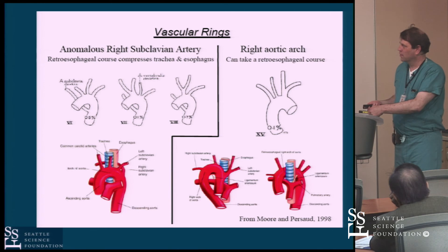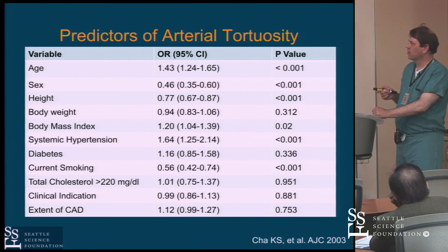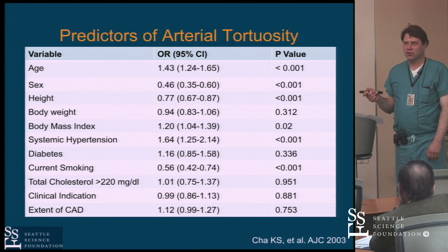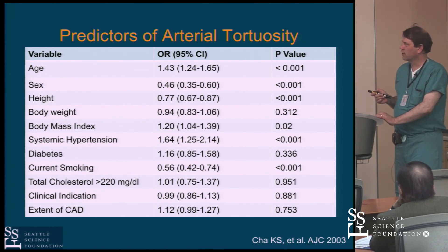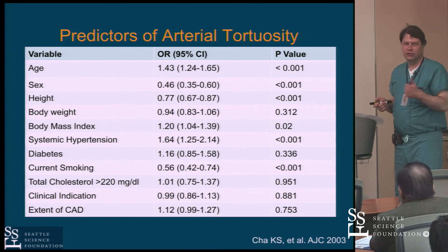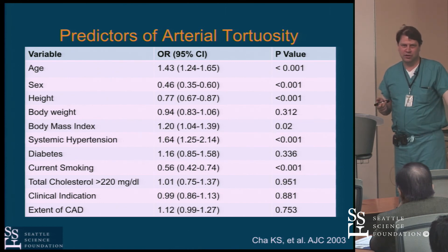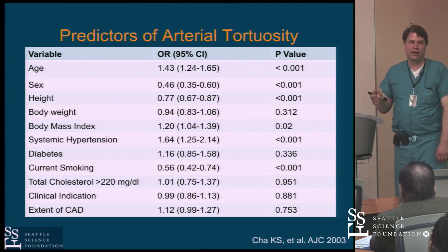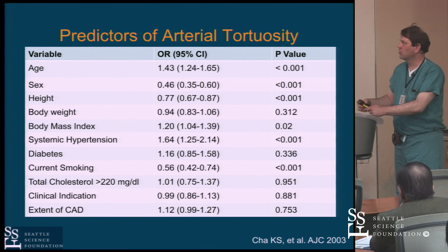Vascular rings are also interesting to be aware of. There are several predictors of arterial tortuosity that help decide whether to go right or left. I prefer to go right if I can, but predictors of problematic innominate artery tortuosity include: age, female gender (females tend to be more tortuous), short stature, hypertension, and tobacco use — all translating essentially into peripheral arterial disease. If I see a short, older woman in particular, I'll say by a priori I'm just going to go left.